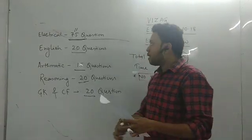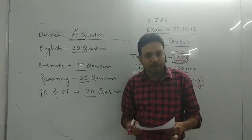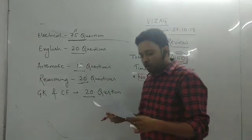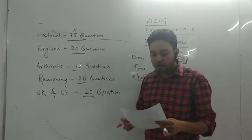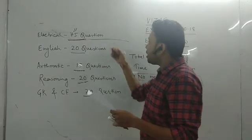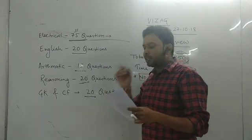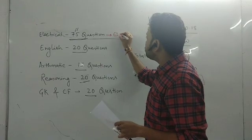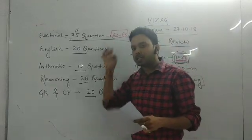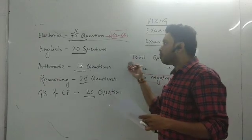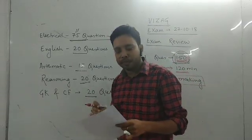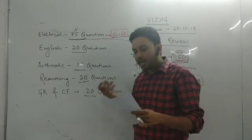Now let's talk about these 150 questions. In the paper, what is the question of the online paper? I will tell you how many questions there are and how much the attempt is. For example, 75 questions are electrical. If you look at the standard, almost 62 to 68 questions are a good attempt. If you attempt half of 75, that will be fine.